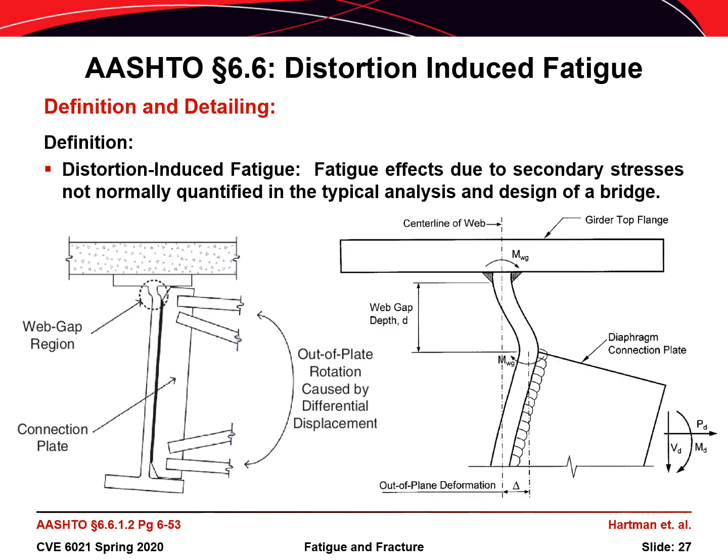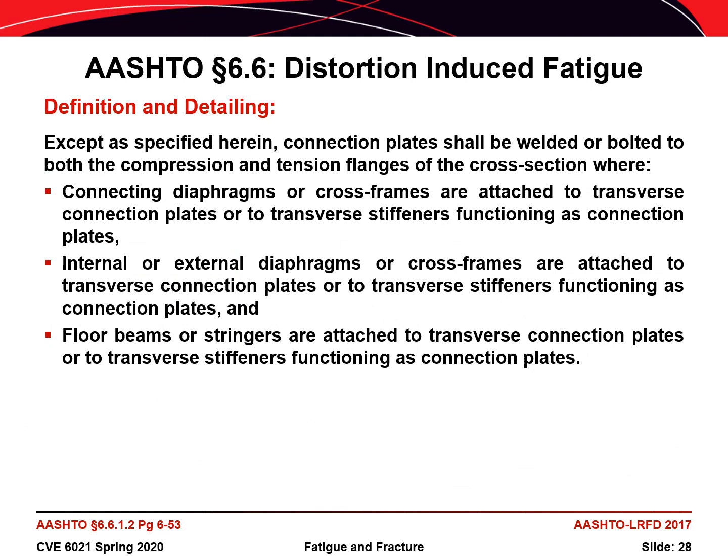Looking at a cross section of a girder near a cross frame, the gap region adjacent to the flange is one of the common places where distortion-induced fatigue cracking occurs, particularly when the connection plate or stiffener isn't welded to both flanges. You could imagine some flexing that might occur in the web if a rigid load path isn't provided. Most engineers wouldn't calculate the stress at this location due to the secondary distortion, and you won't find a detail category for that situation, so it's referred to as distortion-induced fatigue. The stiffener may not be welded to the flange because it creates a load-induced fatigue detail in the flange that might end up controlling.